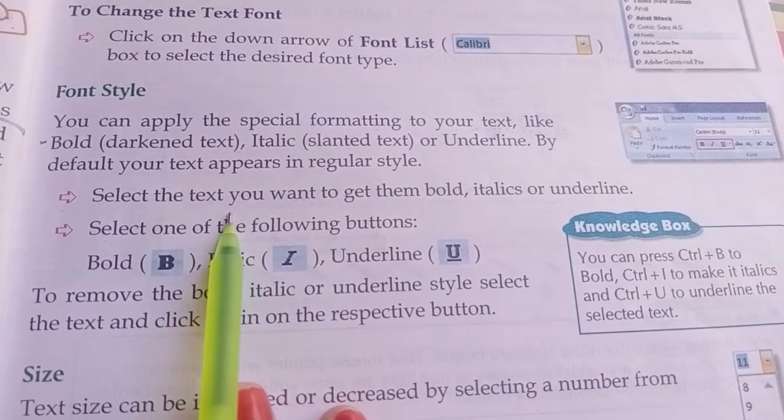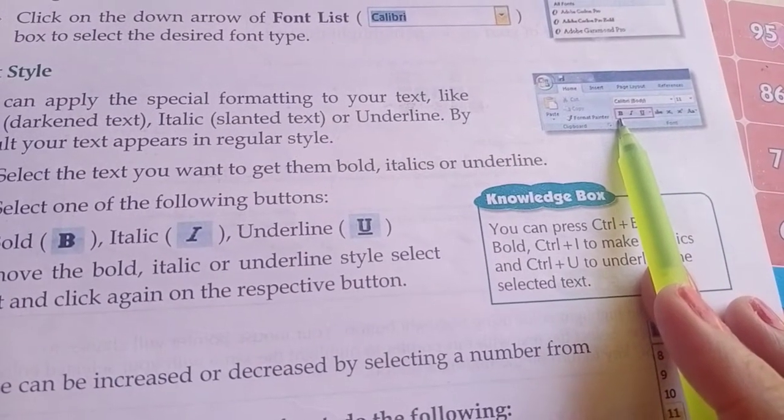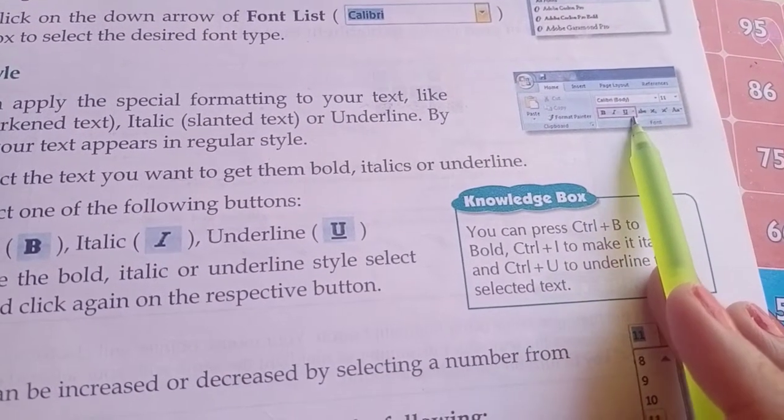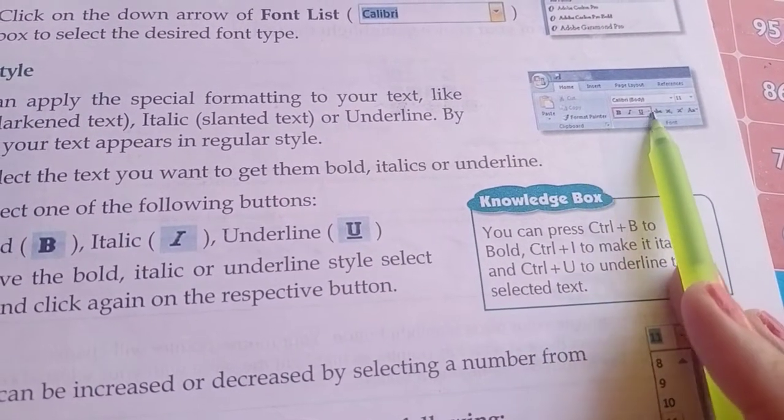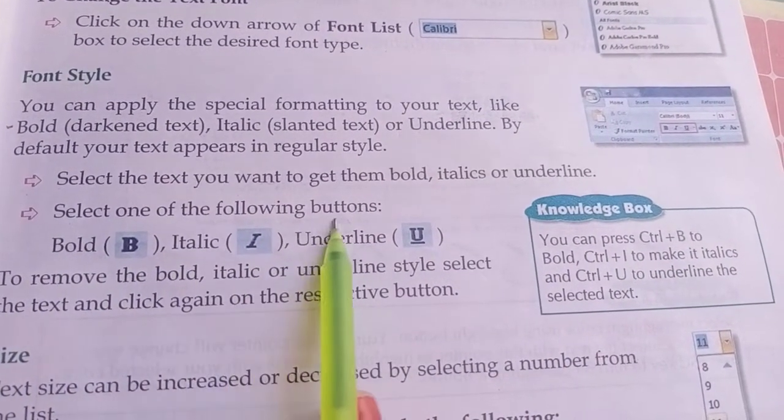Select the text you want to make bold, italics, or underline, then you can select one of the following buttons.